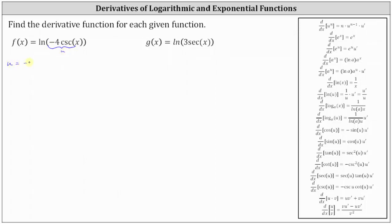So if we have u equals negative four cosecant x, we know we need to find u prime to apply the chain rule, where u prime is equal to the derivative of negative four cosecant x with respect to x, which is negative four times the derivative of cosecant x, which is equal to negative cosecant x times cotangent x. And therefore u prime is equal to four cosecant x cotangent x.